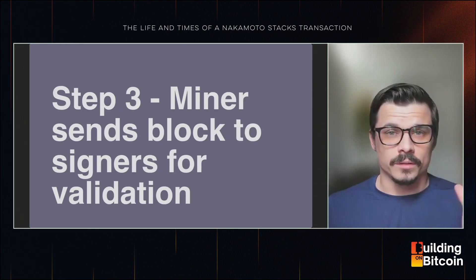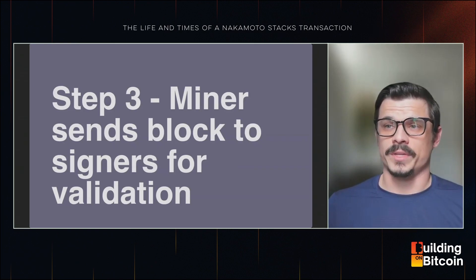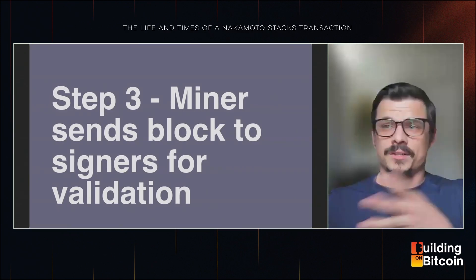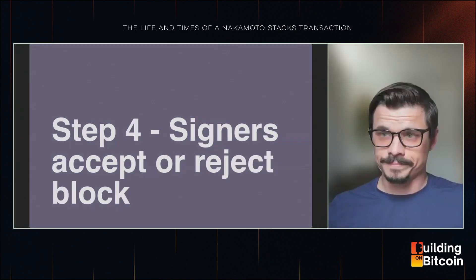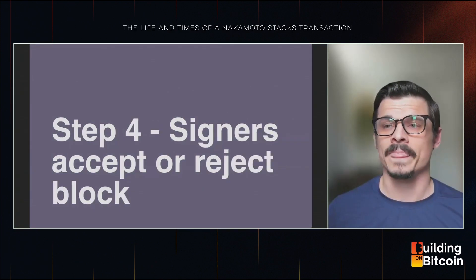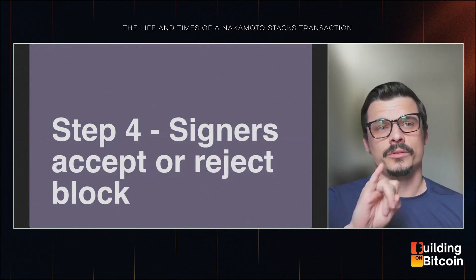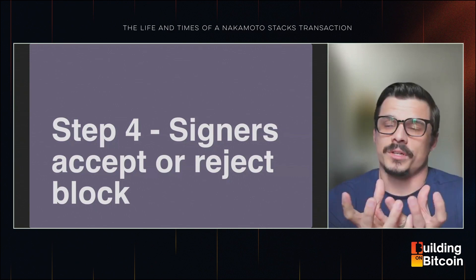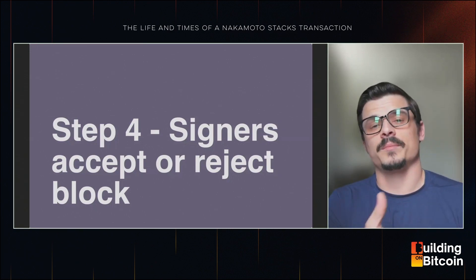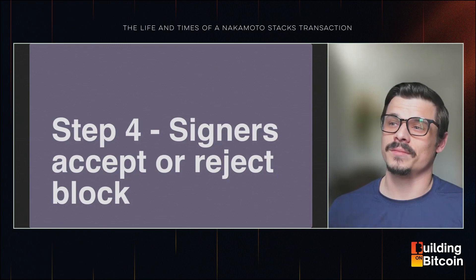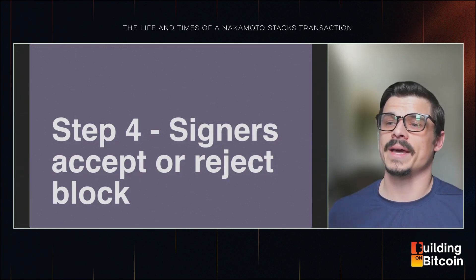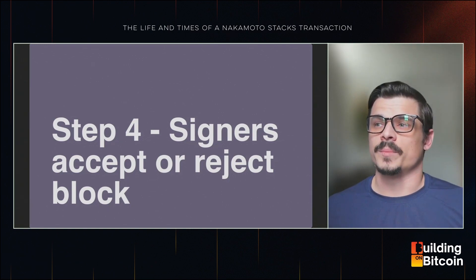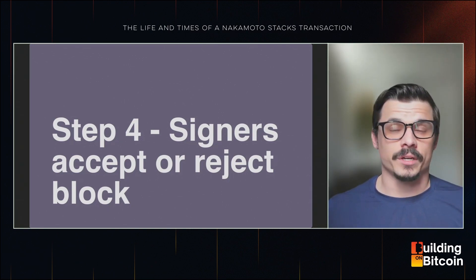This decoupling of Stacks block production from Bitcoin block production is how we achieve fast blocks. But that raises a question: if a single miner is responsible for producing several Stacks blocks, how do we prevent them from adding whatever blocks they want? That's where step three comes in — the miner sends those blocks to signers for validation. Signers either accept or reject the block, and 70% of them need to agree on its validity for it to be added to the chain.